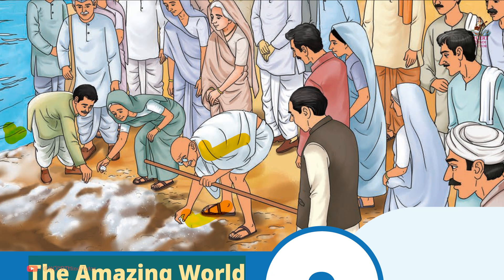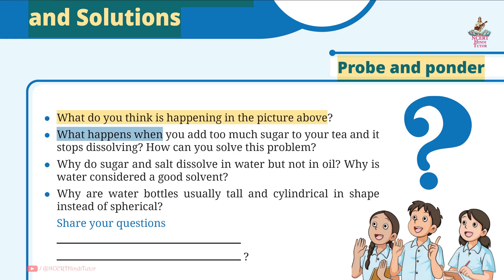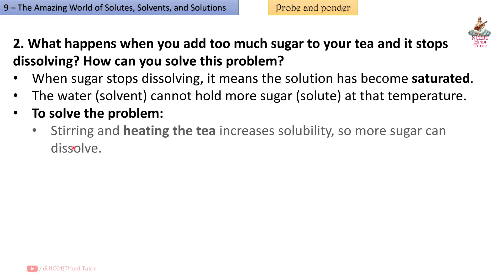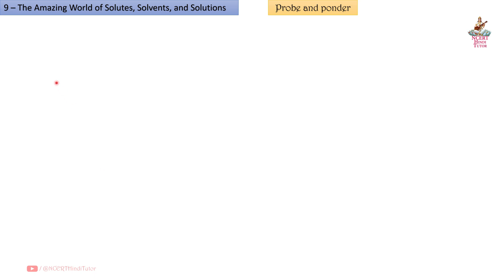Question 2: What happens when you add too much sugar to your tea and it stops dissolving? How can you solve this problem? Answer: When sugar stops dissolving, it means the solution has become saturated. The water solvent cannot hold more sugar solute at that temperature. To solve the problem, stirring and heating the tea increases solubility so more sugar can dissolve.